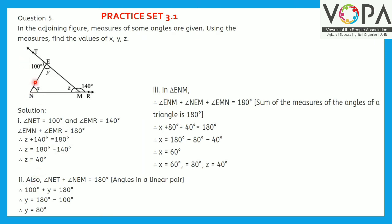Also, angle NET and angle NEM form a linear pair, so their sum is also 180 degrees. Therefore, angle NET plus angle NEM equals 180 degrees. Substituting, 100 plus Y equals 180 degrees. So Y equals 180 minus 100, that is Y equals 80 degrees.